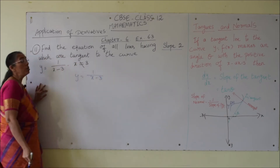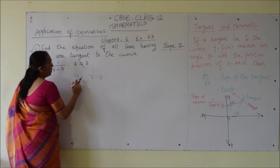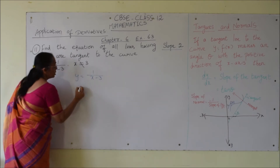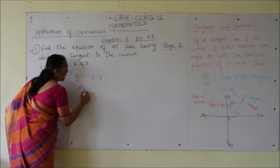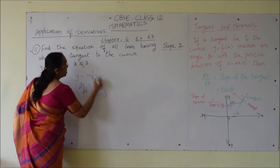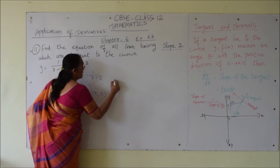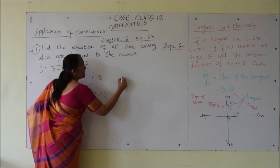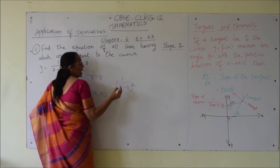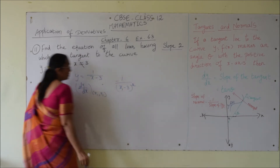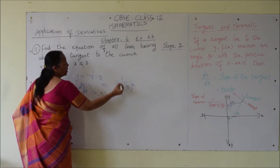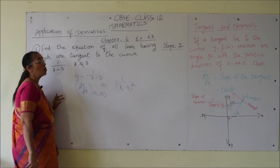This is similar to the previous problem. We find the slope of the tangent to the curve, which is dy/dx at a particular point (x1, y1). The differentiation of 1 over (x minus 3) is negative 1 divided by (x minus 3) squared, so the slope at point (x1, y1) is negative 1 divided by (x1 minus 3) whole square.